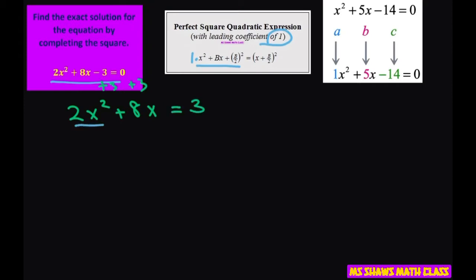Now I'm going to factor out a 2 from this part. So it's going to give you x squared plus 4x equals 3. Now divide both sides by 2. That gets rid of that. So that's our equation.